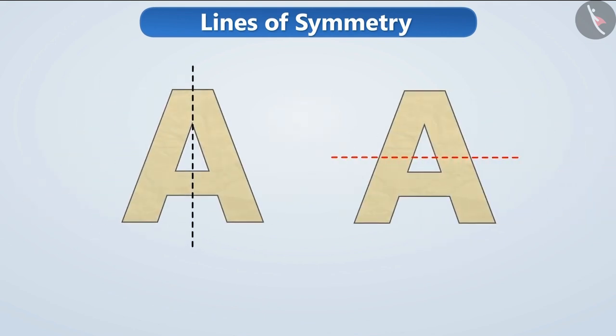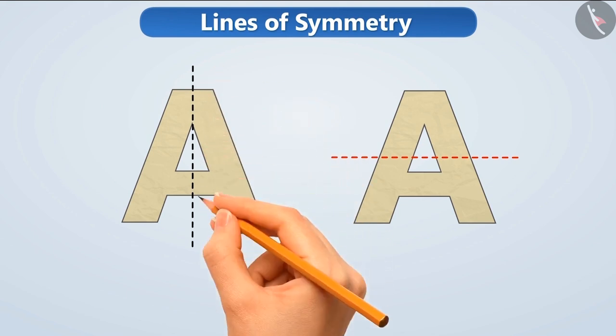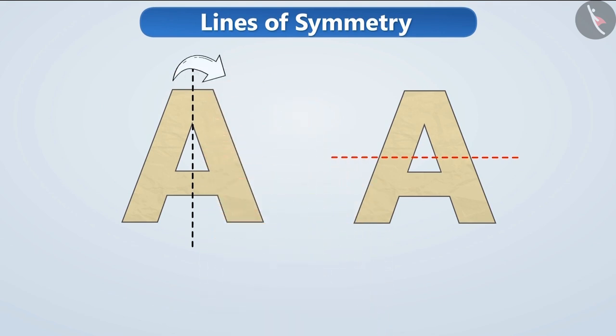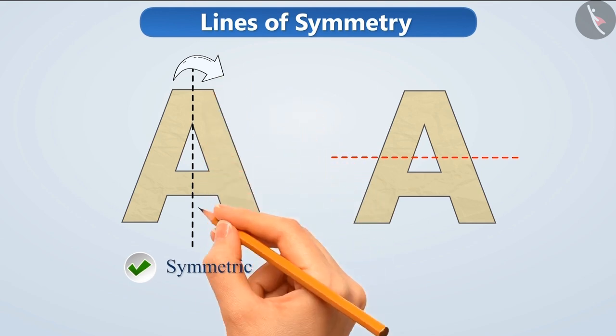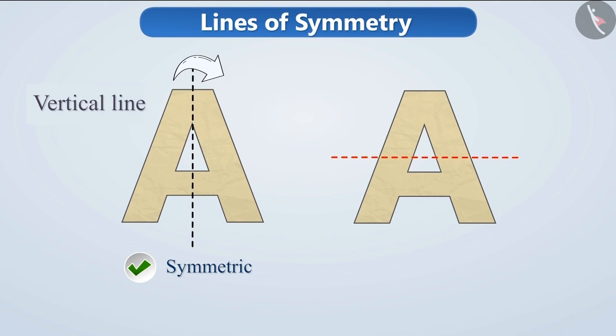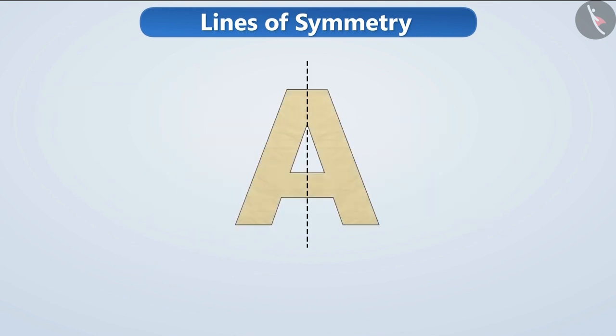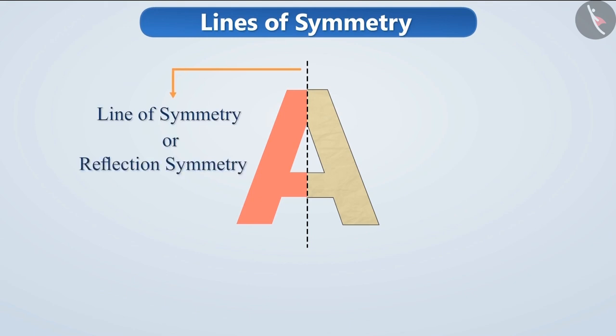On the basis of both conditions, we can say that the symmetry of the figure is apparent only when it is bent along a particular line, like the vertical line passing from the middle of A here. Such lines which divide the figure into two halves such that both halves cover each other completely if folded through that line are called lines of symmetry or reflection symmetry. It is also known as reflection line.